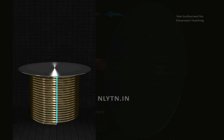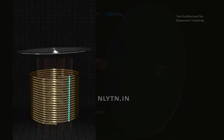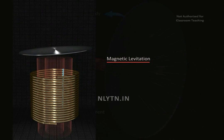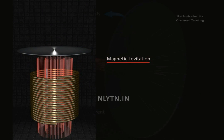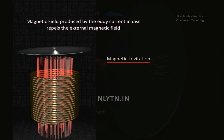It is often used to achieve magnetic levitation. This happens because the magnetic field produced by the eddy current in the disk repels the magnetic field of the source.